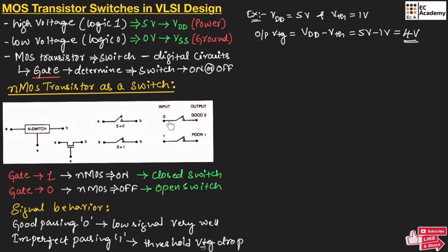When the input is 0, the output is 0, which is good. When the input is 1, the output is poor due to the voltage drop across the NMOS transistor caused by the threshold voltage. So, you need to remember that the NMOS transistor is good at passing logic 0.